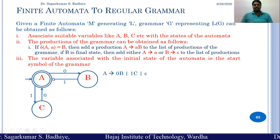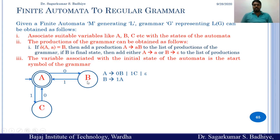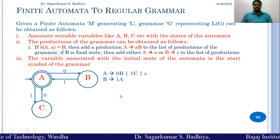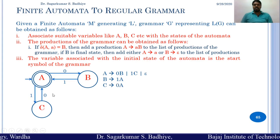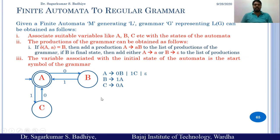So we add A derives to epsilon. Then B on 1 goes to A, so we add a rule B derives to 1A. Similarly, C on 0 goes to A, so we write a rule C derives to 0A. This is one representation of the grammar for the given finite automata.